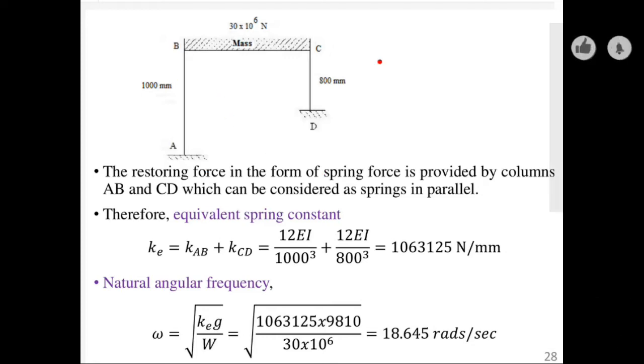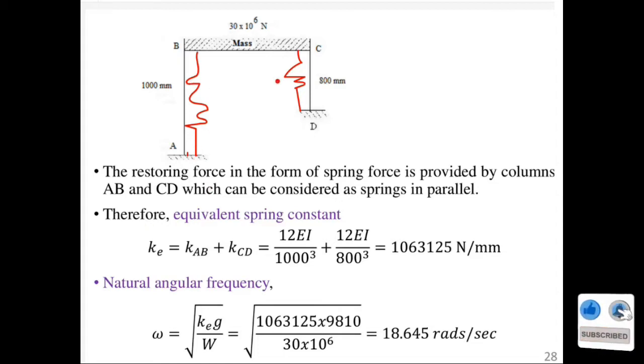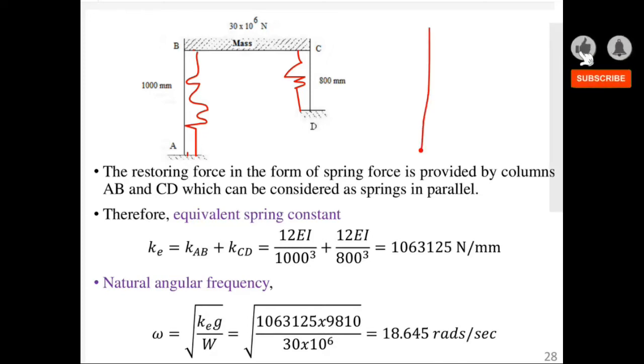This column can be represented by a spring. We have a spring there and another spring here. You can get the equivalent spring constant because these are springs in parallel. A case for springs in series would be where we have a multi-story building, with springs stacked vertically.